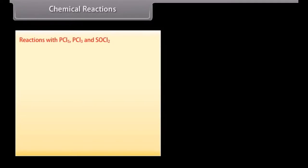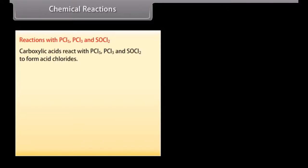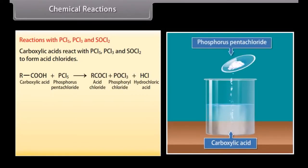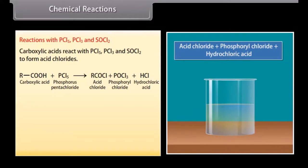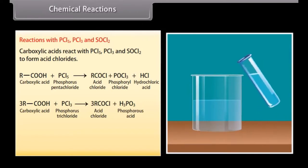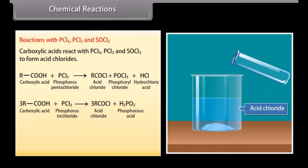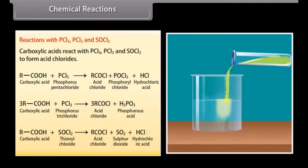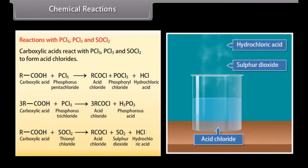Reactions with phosphorus pentachloride, phosphorus trichloride and thionyl chloride: These react with carboxylic acid to form acid chlorides. Carboxylic acid reacts with phosphorus pentachloride to form acid chlorides, phosphoryl chloride and hydrochloric acid. Carboxylic acid reacts with phosphorus trichloride to form acid chlorides and phosphorous acid. Carboxylic acid reacts with thionyl chloride to form acid chlorides, sulfur dioxide and hydrochloric acid.